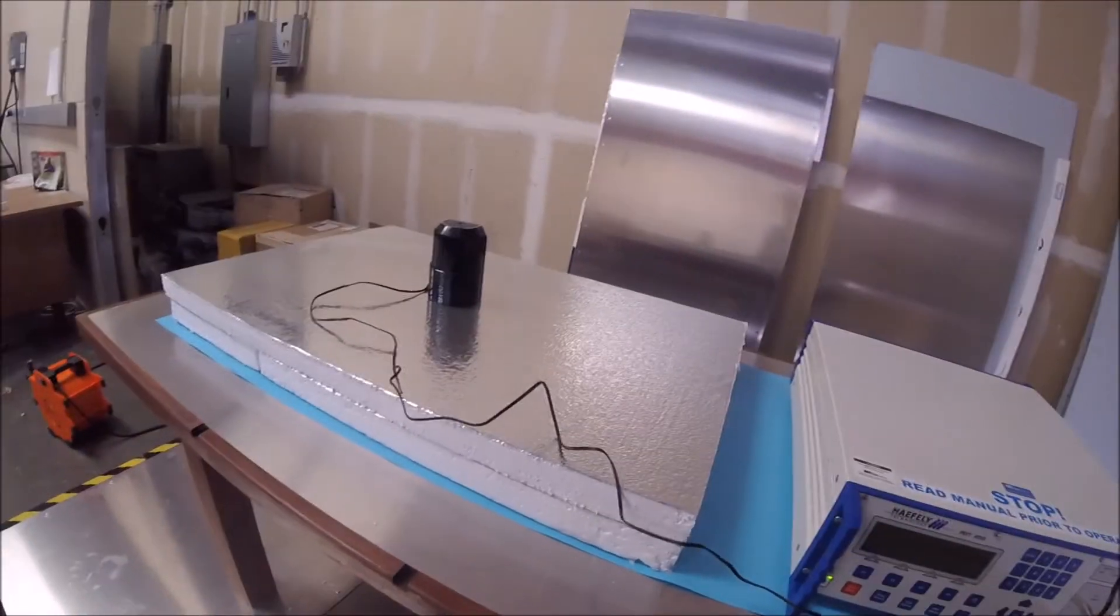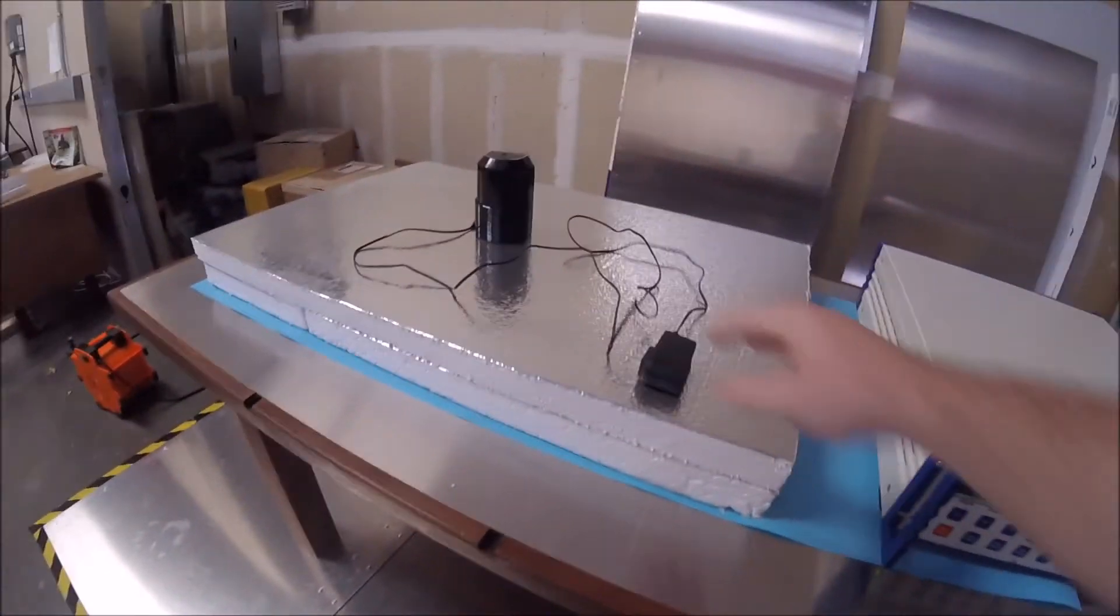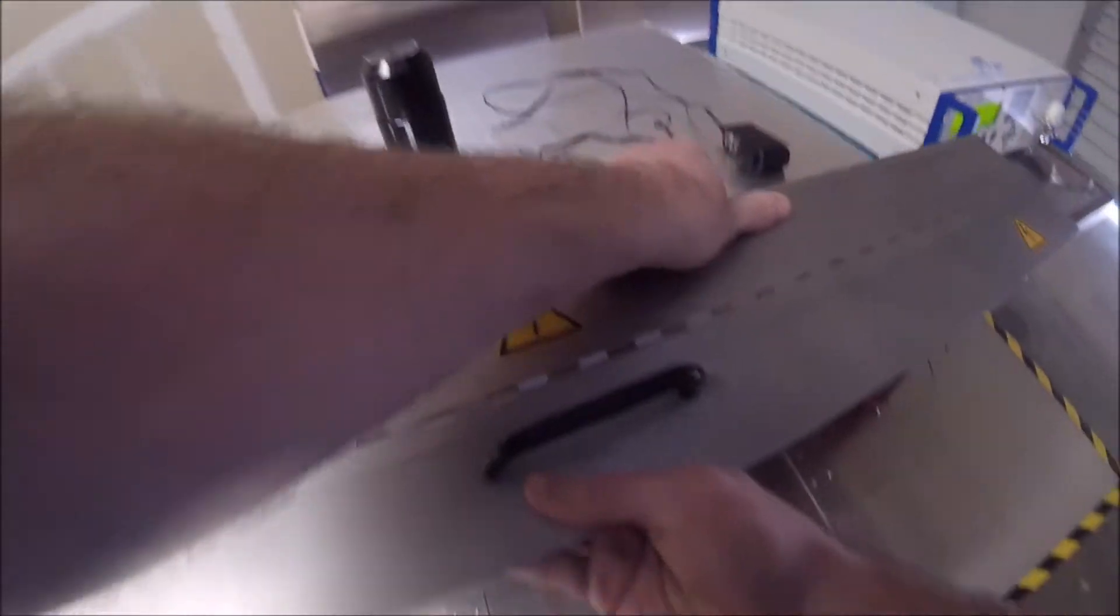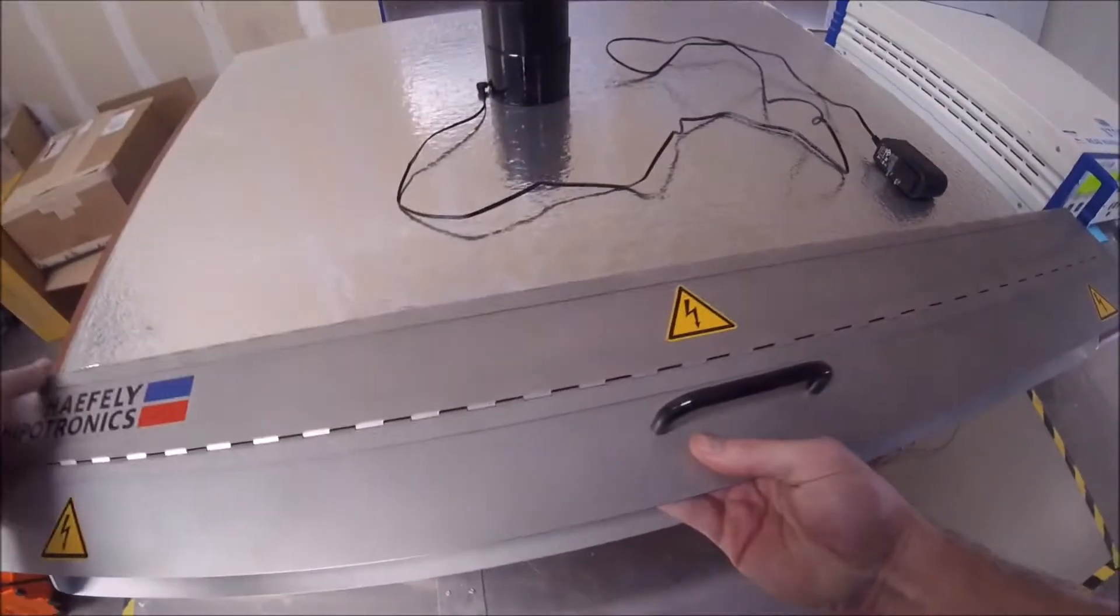This pencil sharpener is sitting on top of 10 cm of insulation on top of the ground plane. If I had a product that is running data lines, I would set up my EFT clamp so it is making direct contact to our ground plane.